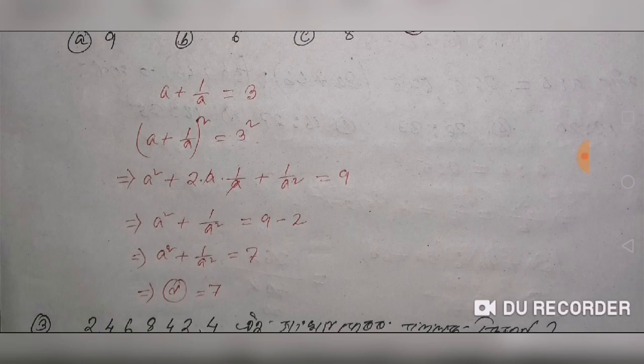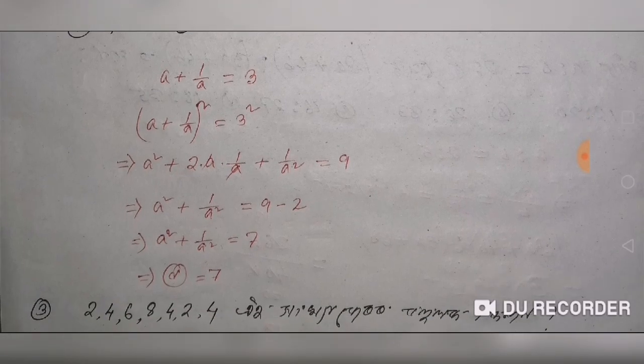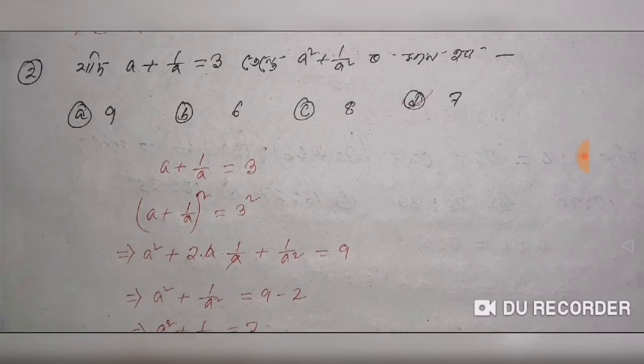So 1 by A squared equals 3 squared. We cancel the 2A term: A squared plus 1 by A squared equals 9 minus 2, which gives us 7. The option is D.